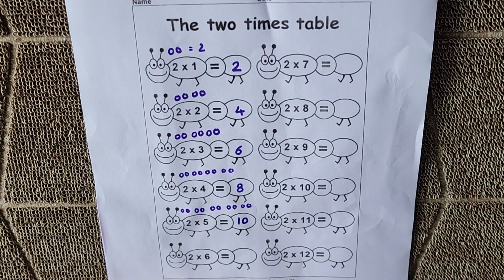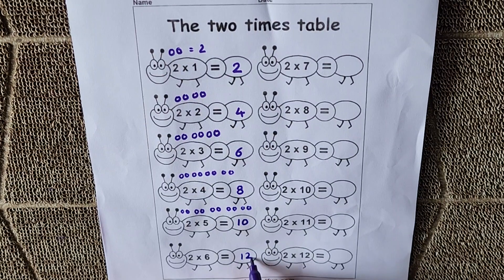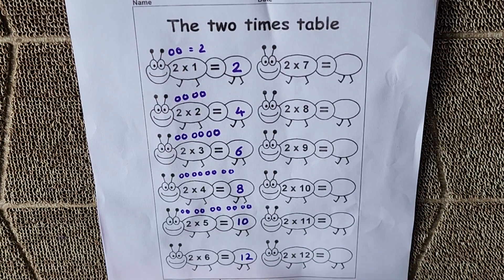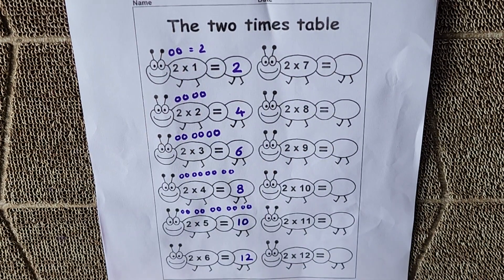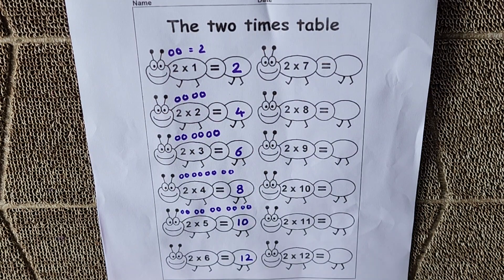Similarly, you have to do the same thing. 2 6s are 12. Means 2 balls how many times? 6 times. Then we will count how many balls. That is 12. 2 6s are 12.